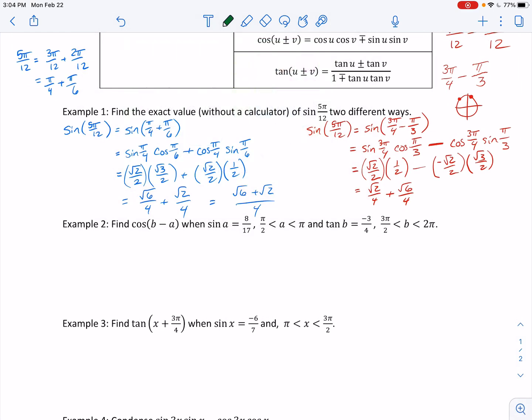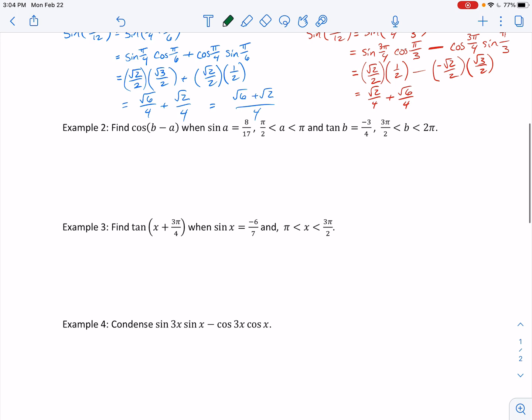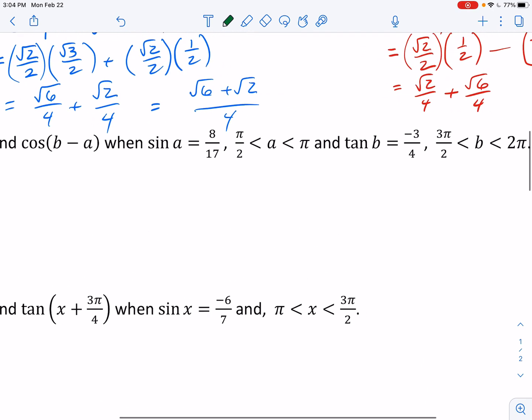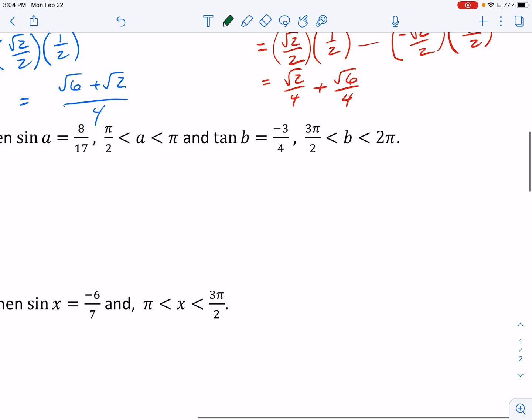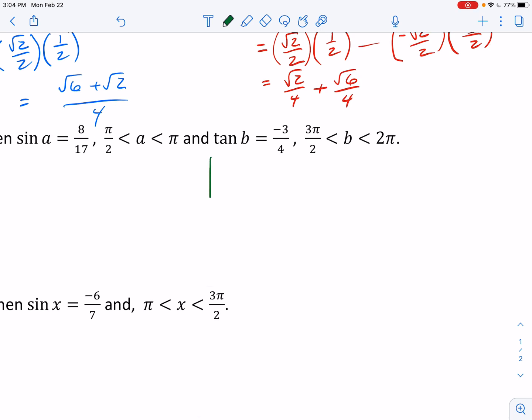Okay, find cosine of b minus a when sine is given and tangent is given. Oh, goodness. Okay, here's how I would start this problem. I would put, I would draw a, and notice a is going to go from pi over 2, it's somewhere between pi over 2 and pi, so that means that angle a is in the second quadrant.